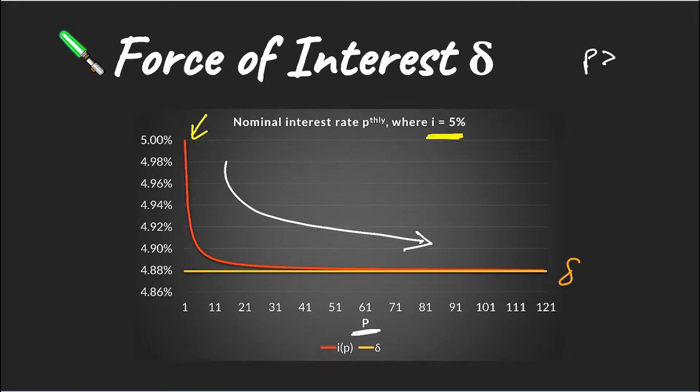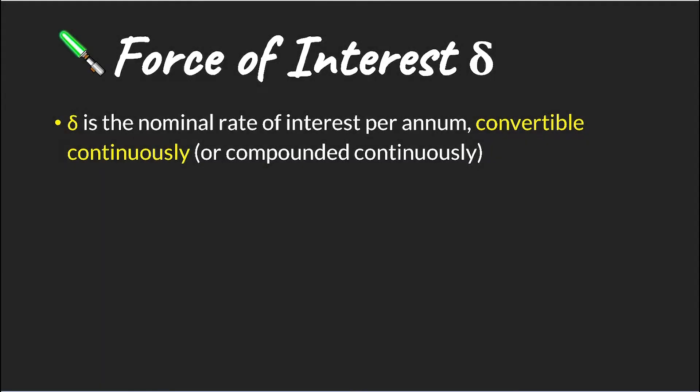Here we have an effective interest rate of 5%, and we've previously shown that if our P is greater than 0, that our i^(P) will always be less than i. In other words, our nominal rate will always be less than our effective rate. And that is also what we're seeing in this chart. So our force of interest is essentially our continuously compounded interest rate, that is compounded every moment. And this acts as a force of interest.